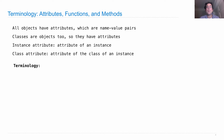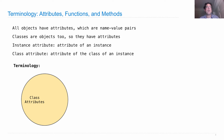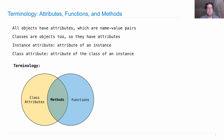There's also terminology around functions and methods. If you take the set of all things that are class attributes and the set of all things that are function-valued, methods are their intersection. So a method is a class attribute — meaning a name-value pair on the class of an instance — where that value is a function, because functions are a type of value.